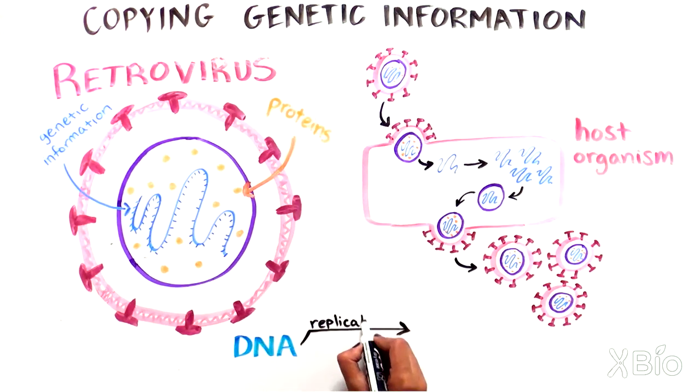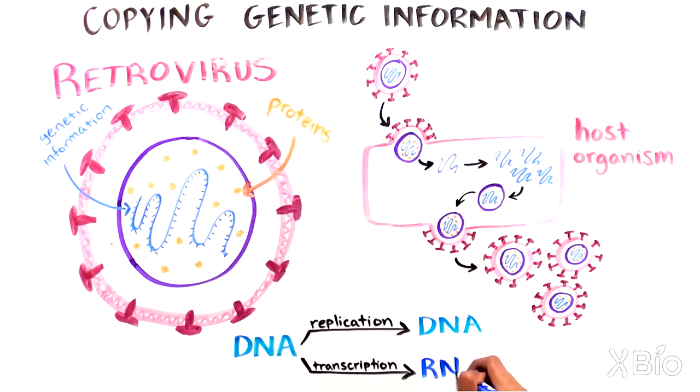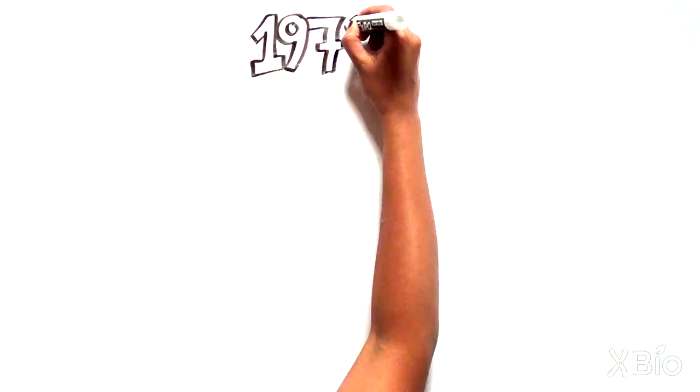Scientists knew how DNA was copied to make more DNA. They also knew how DNA was copied to make RNA. But retroviruses posed a puzzle. How can the RNA in these viruses be copied?